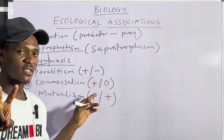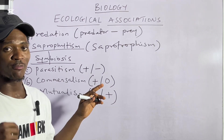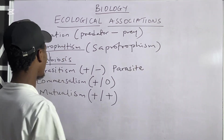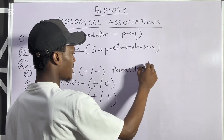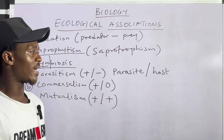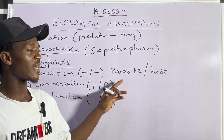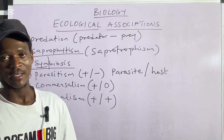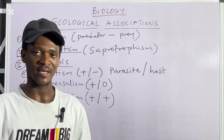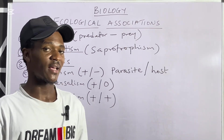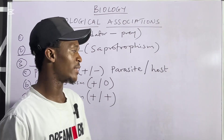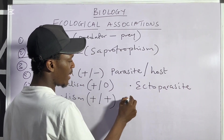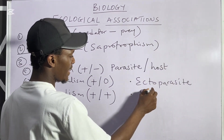In parasitism, the plus-minus means two organisms are involved — one is benefiting while the other is suffering harm. The one that benefits is the parasite, and the one that carries it is the host. The parasite benefits at the detriment of the host. There are two divisions of parasites: ectoparasites, which live outside the body of their host, and endoparasites, which live within the body of their host.